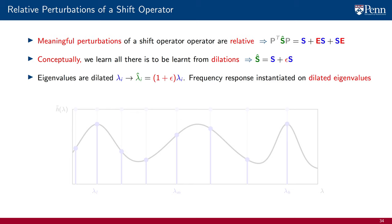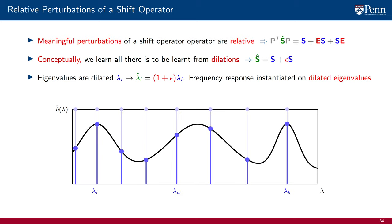When we consider this specific perturbation, the eigenvalues of the shift operator are themselves dilated. This results in the frequency response being evaluated at the dilated eigenvalues. Thus, if we are given a graph with eigenvalues lambda_i, the dilated shift operator has eigenvalues lambda_hat_i, each of which is an eigenvalue lambda_i dilated by 1 plus epsilon.